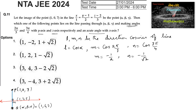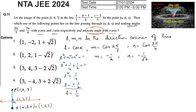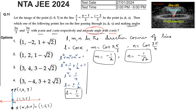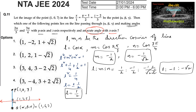Using the relation L² + M² + N² = 1: L² + 1/4 + 1/2 = 1, so L² = 1 − 3/4 = 1/4, giving L = ±1/2. Since the angle with the x-axis is acute, L = +1/2. Thus the direction cosines are L = 1/2, M = −1/2, N = −1/√2, and the direction ratios are proportional to 1 : −1 : −√2.